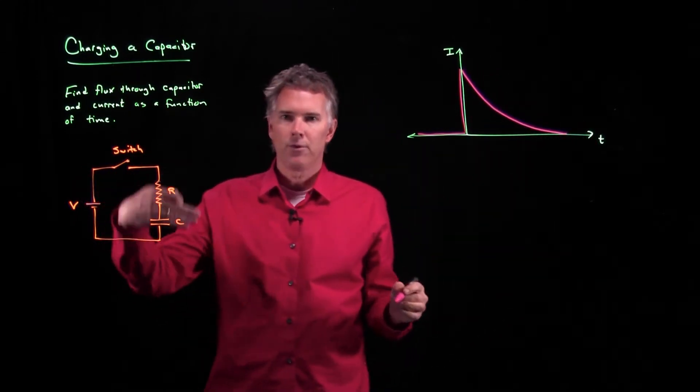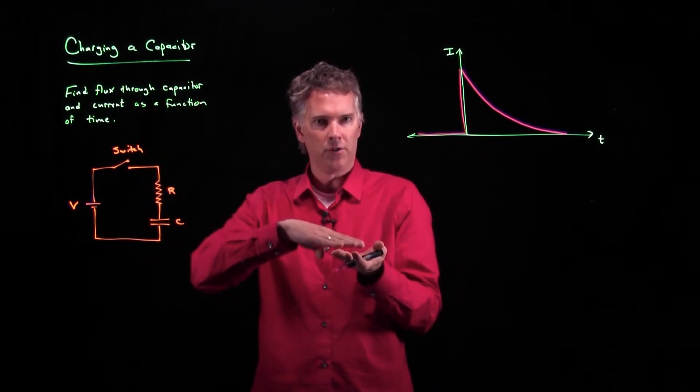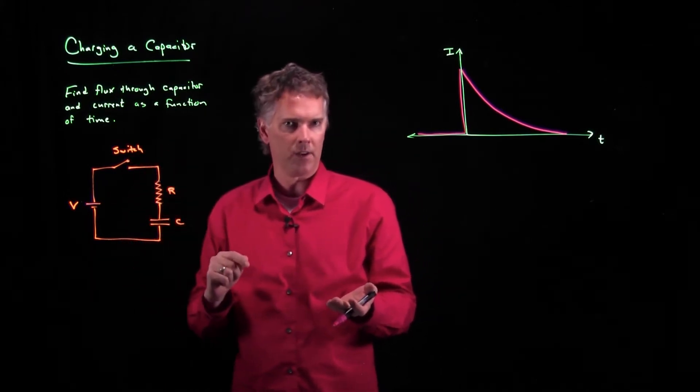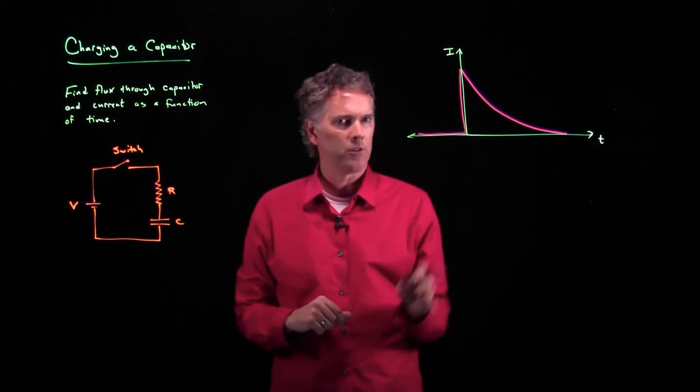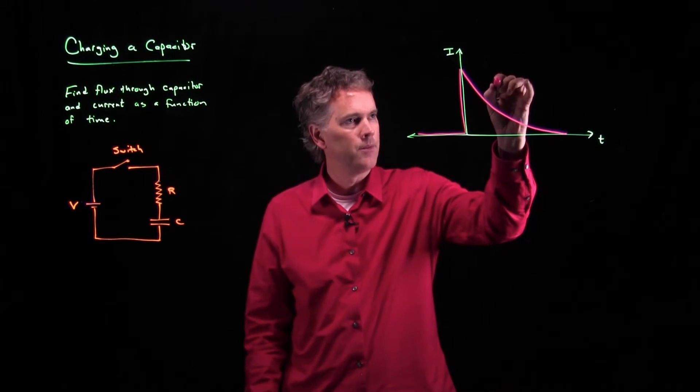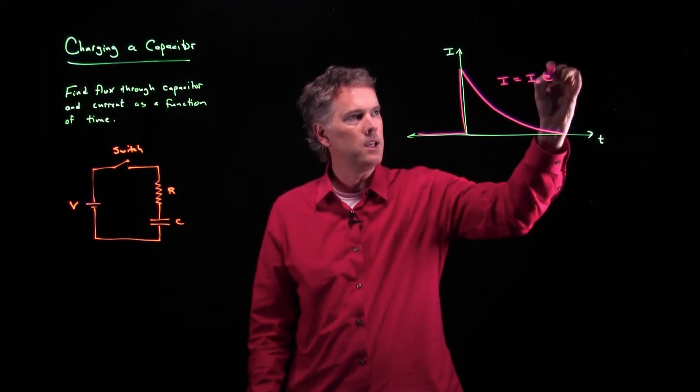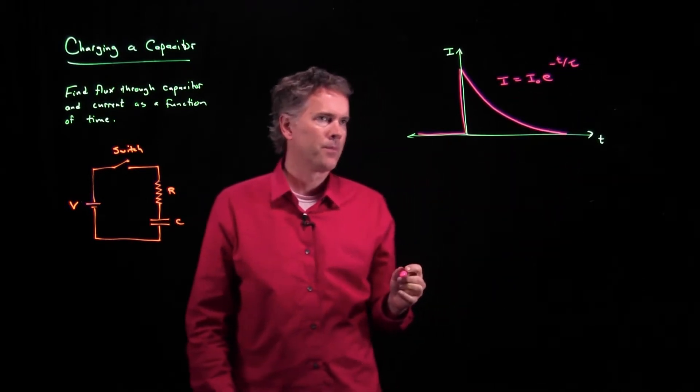We know that after a very long time it has to go back to zero because the capacitor charges up and then it stops. It can't move current across it anymore because it's two parallel plates. And we know what this curve looks like. This curve has a behavior, I is equal to I naught E to the minus T over tau.